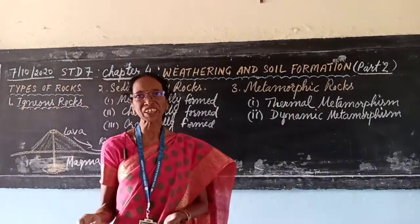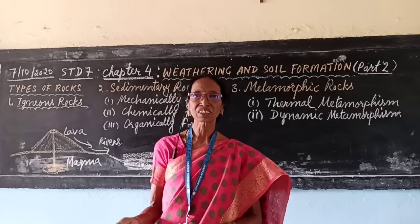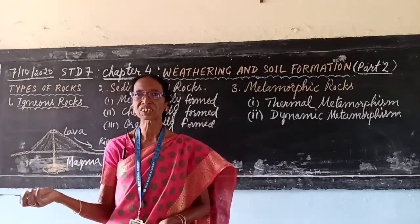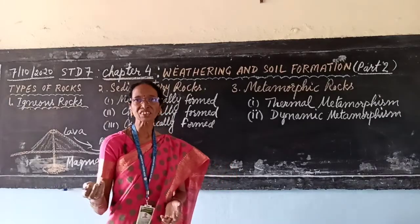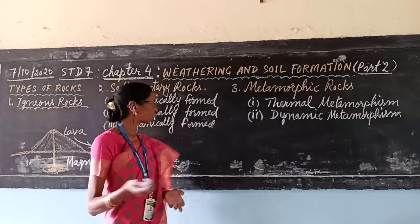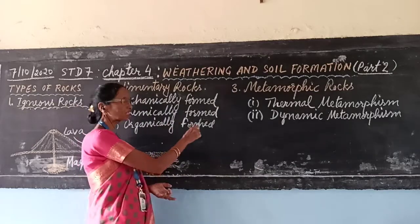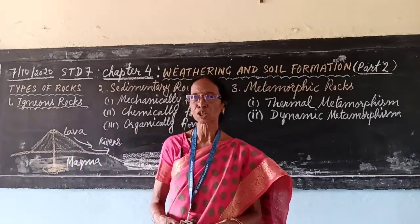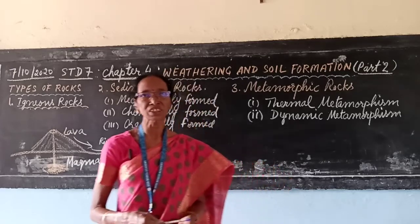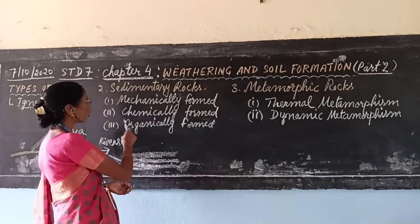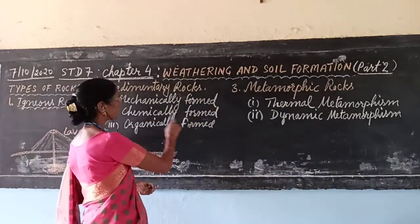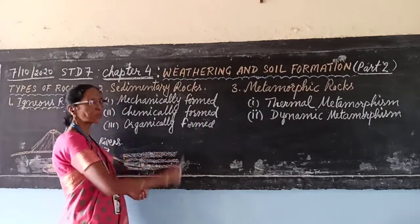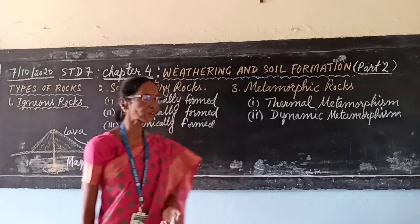Second is the chemically formed sedimentary rocks. It takes place due to chemical action, reaction with water, and the presence of gases. The processes that form chemically formed sedimentary rocks are oxidation, hydration, carbonation, and solution. Examples of chemically formed sedimentary rocks are gypsum and rock salt.